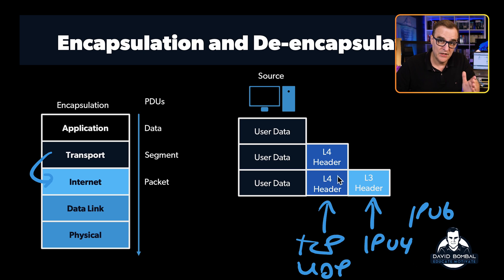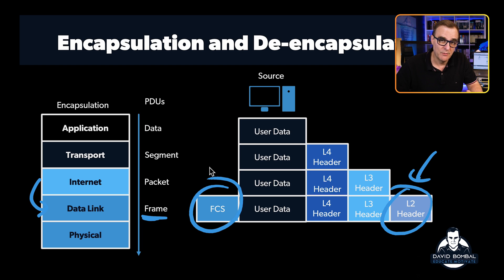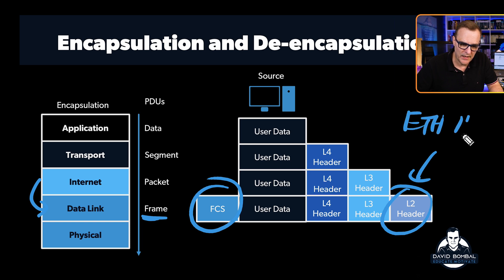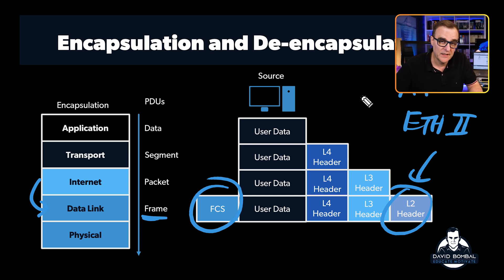Headers are added at each layer. In the same way, layer three sends the packet to layer two, and a new layer two header is added — this is known as a frame. A frame check sequence is also added to make sure the frame hasn't been corrupted in transmission. This could be an Ethernet II header, or if we went across a serial link, it would be PPP or HDLC. Different encapsulations are used at layer two. Layer four could be TCP or UDP, layer three IP version four, and layer two Ethernet.